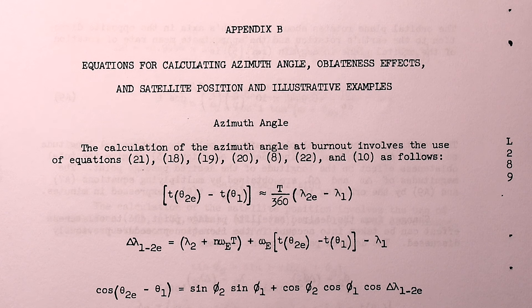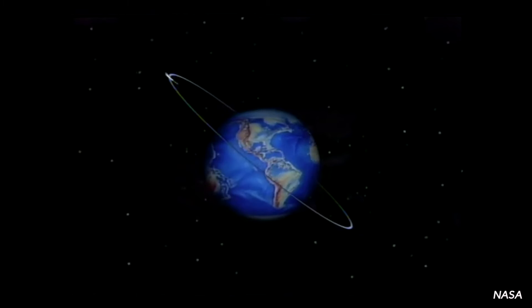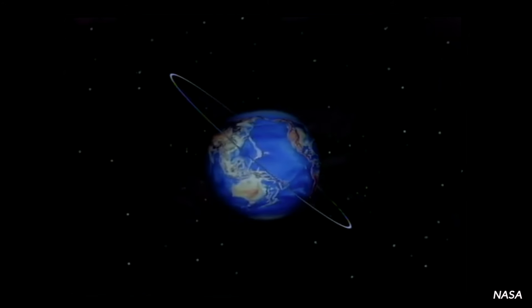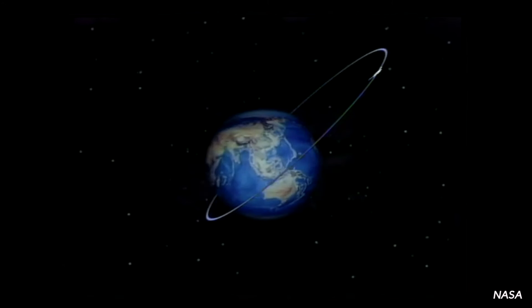They go on to present two example orbit calculations: one for a satellite that is launched westward and one for a satellite launched eastward, just to show that this method is not limited by the direction of launch.